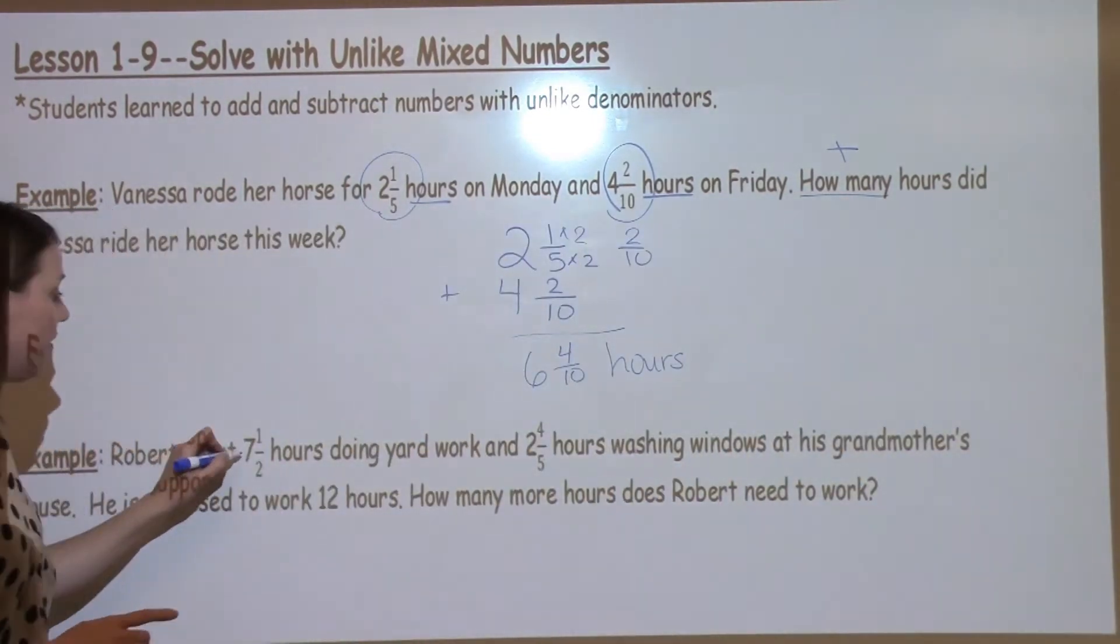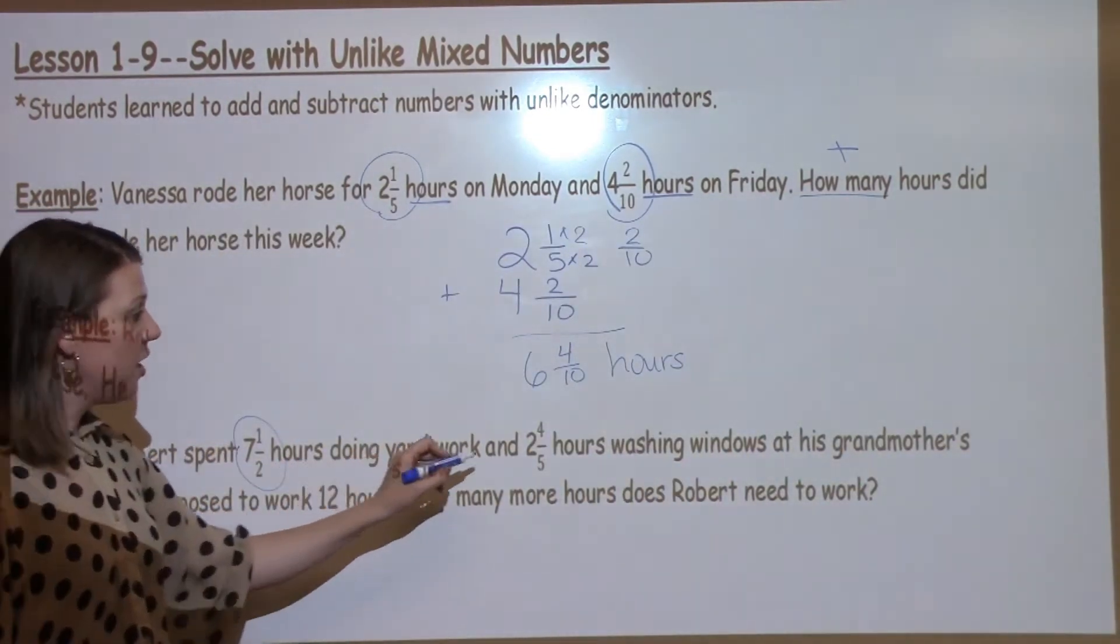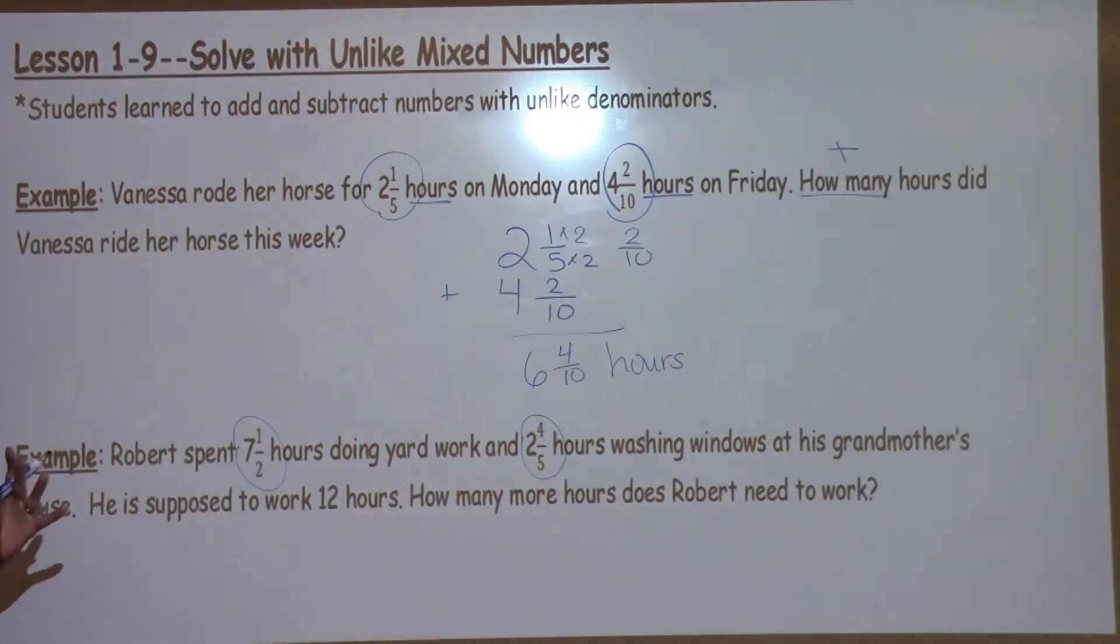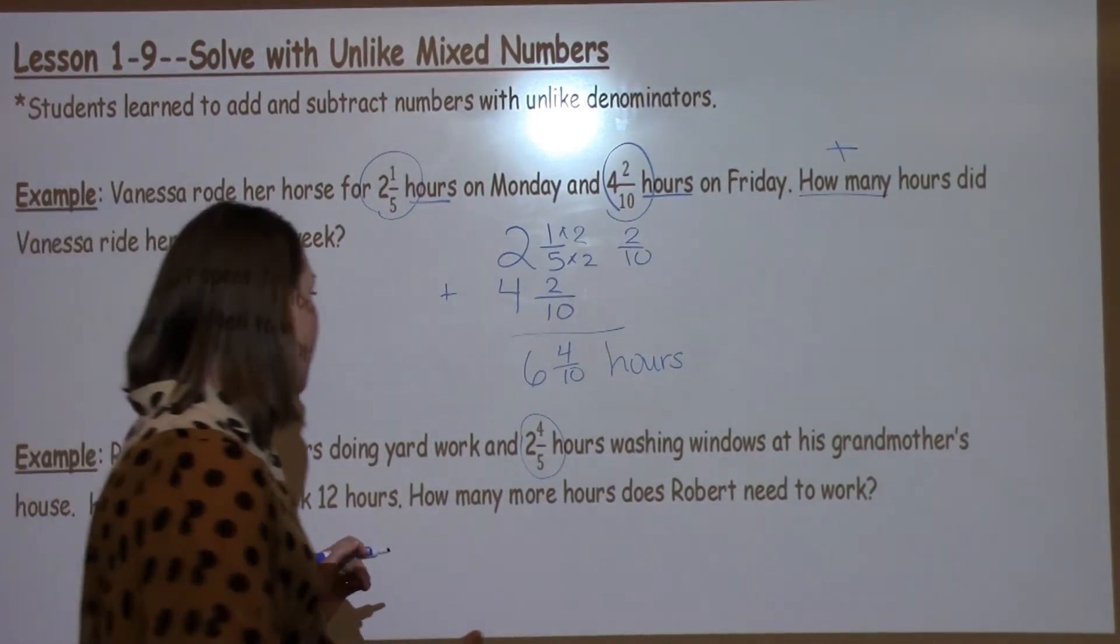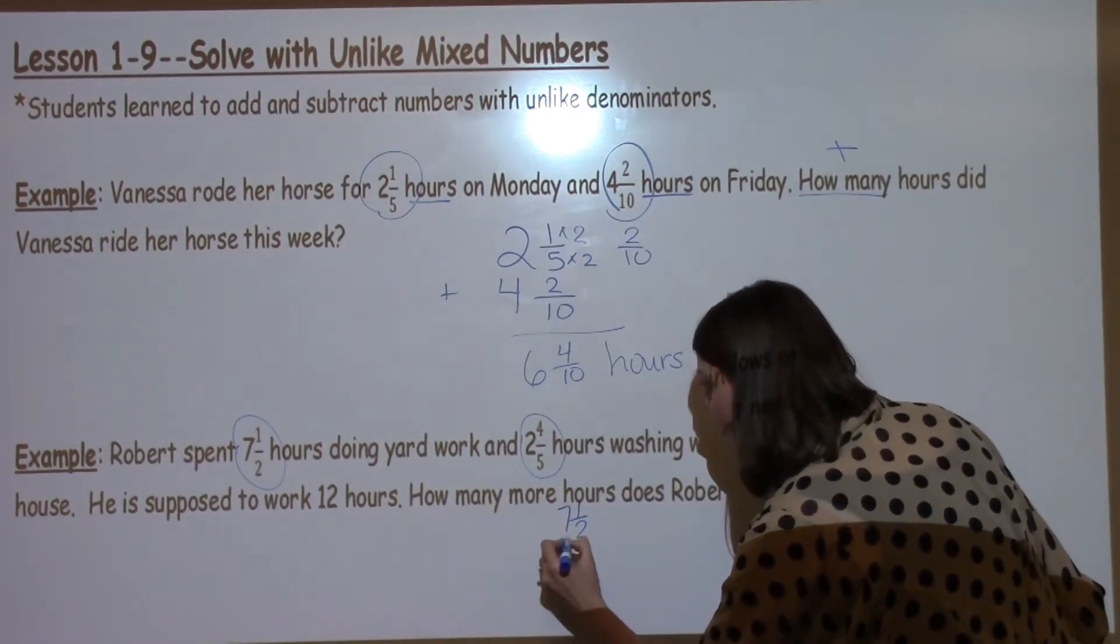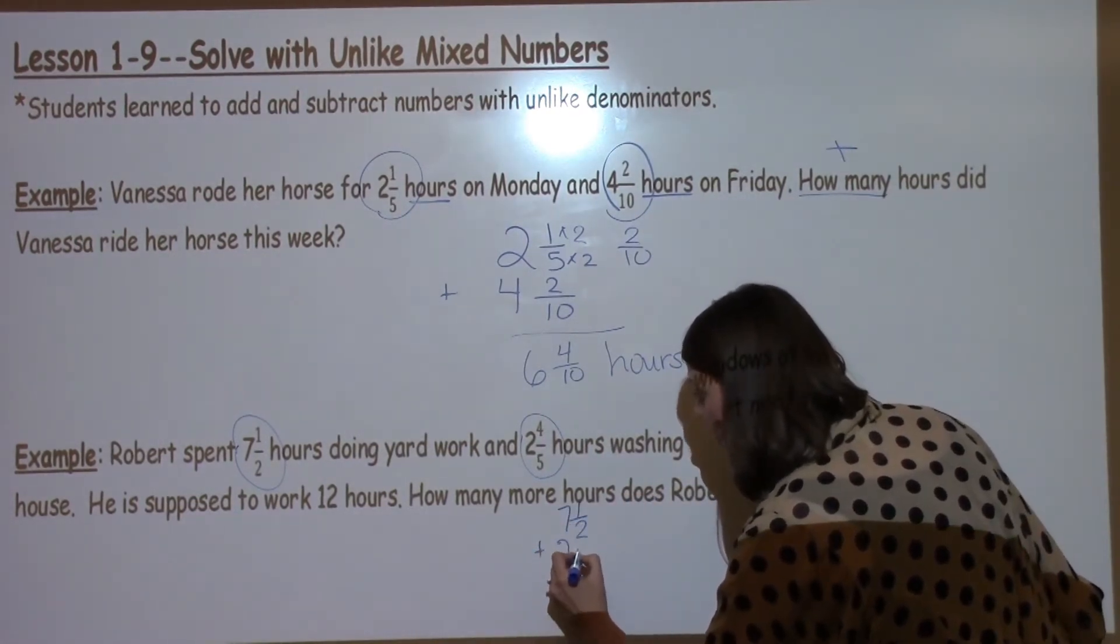So we know that he's worked 7 and 1 half hours, and we know that he has worked 2 and 4 fifths hours. Let's figure out how much he's worked total so far. To do that, I need to add. So I'm going to take my 7 and my 1 half plus my 2 and 4 fifths.